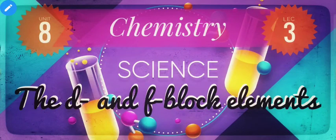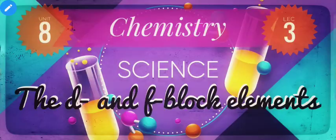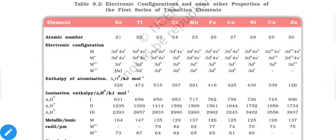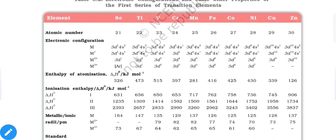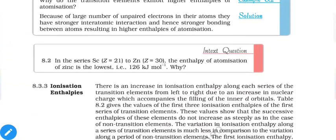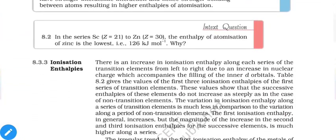Hello students, welcome to the third lecture of D and F block elements. In the last lecture we discussed Table 8.2 and observed certain properties of the first transition series, the 3d series. Now let's jump to their other details.